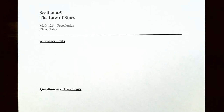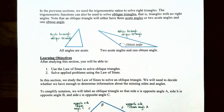Hi everyone, it's Professor Permanent and today we're going to talk about the law of sines. In previous sections we used trigonometric ratios to solve right triangles. The trigonometric functions can also be used to solve oblique triangles, which are triangles that do not have a right angle.